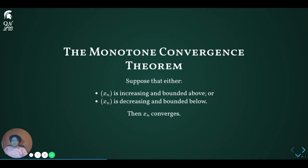We now finally arrive at the theorem. The monotone convergence theorem states: if a sequence is either increasing and bounded above, or decreasing and bounded below, then the sequence converges.